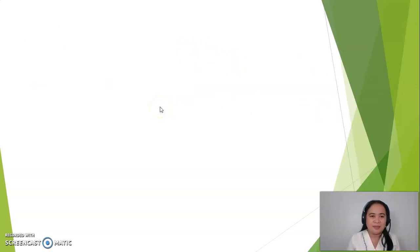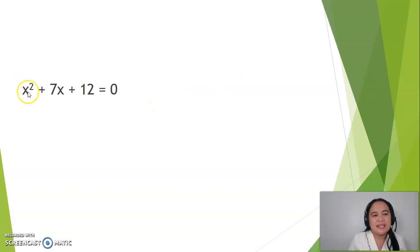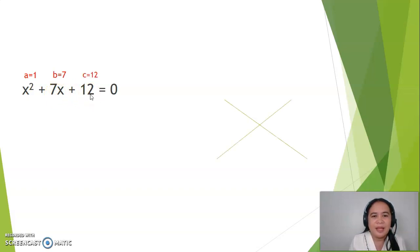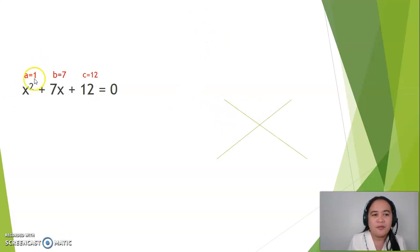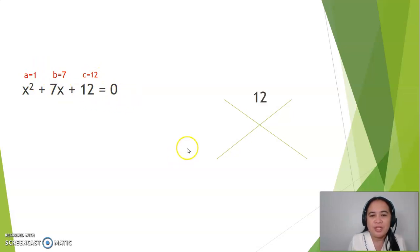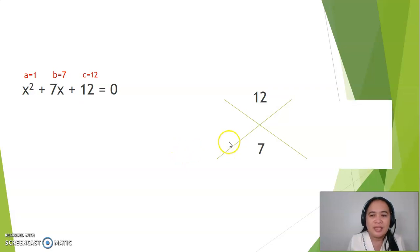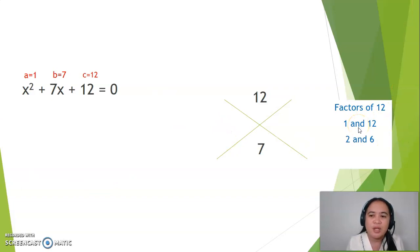Now let's have an example. In this case, the value for a is 1, the value for b is 7, and the value for c is 12. Writing this in the X pattern, at the upper part should be the product of 1 and 12, which is 12. At the lower part should be the value for b, which is 7. Take note, considering the factors of 12, it could be 1 times 12, 2 times 6, or 3 times 4.